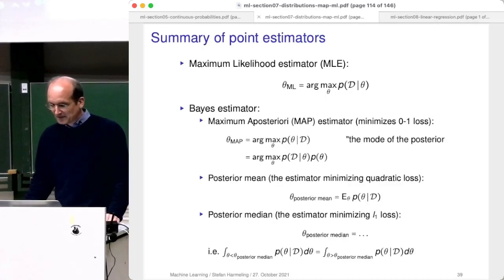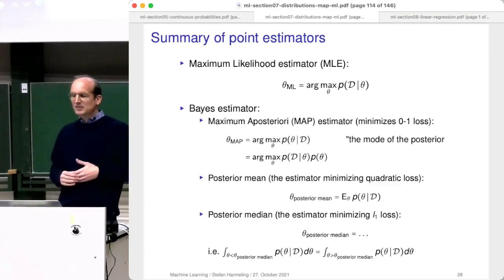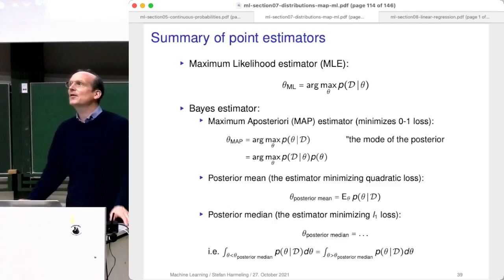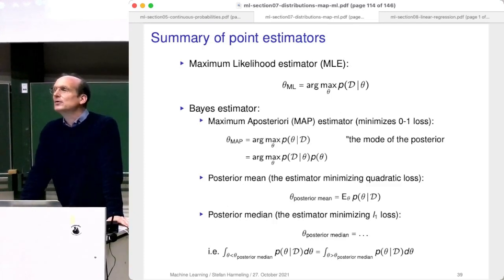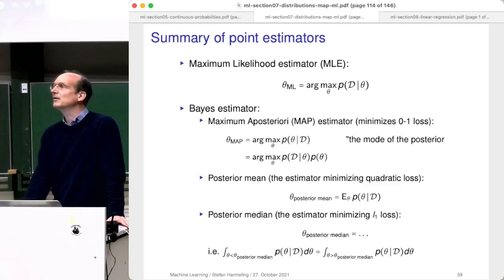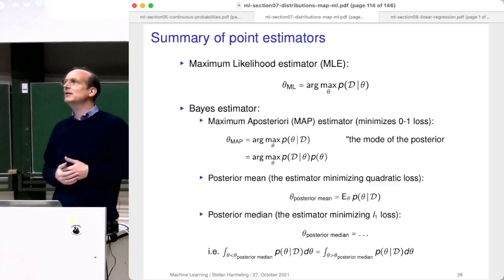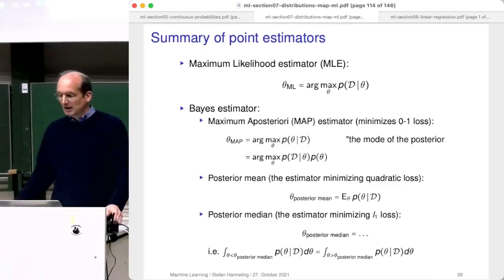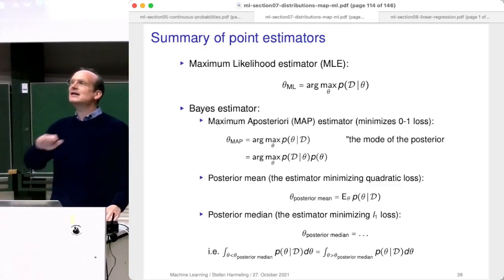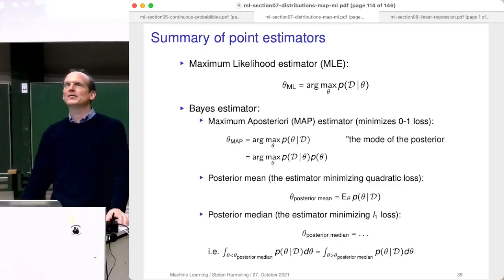Last time we talked about estimation — a summary of point estimators. Starting from our Bayesian point of view, with Bayes rule: prior, posterior, likelihood, evidence — we were able to talk about maximum likelihood estimation, which is basically just maximizing the likelihood. That's a frequentist, classical estimator, very well known, very good. We can understand it also having our Bayesian head on — it's just maximizing the likelihood and ignoring the prior and the posterior.